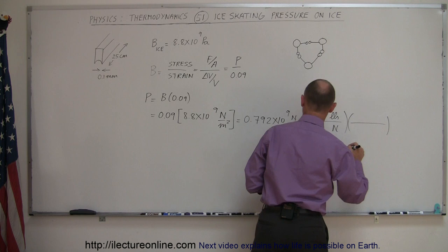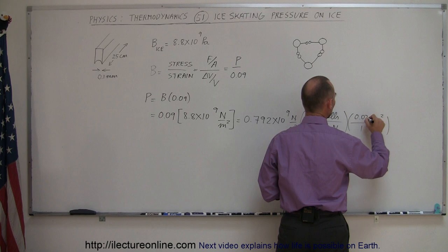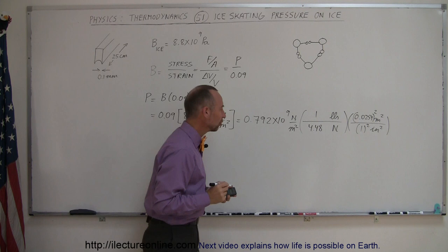Then we have to convert from square meters to square inches, so we need inches squared at the bottom, meters squared at the top, and of course one inch is 0.0254 meters, and we have to square that to have the proper change in units.